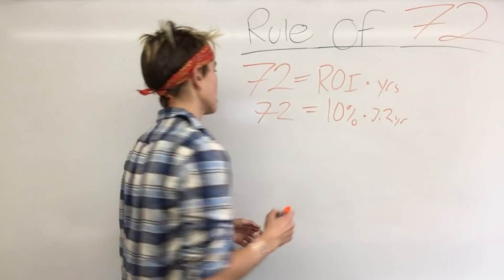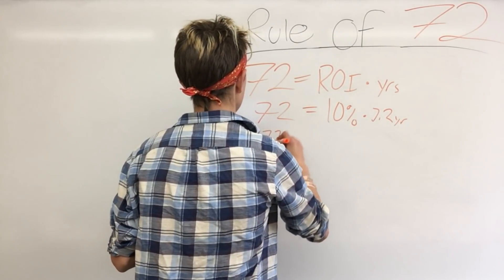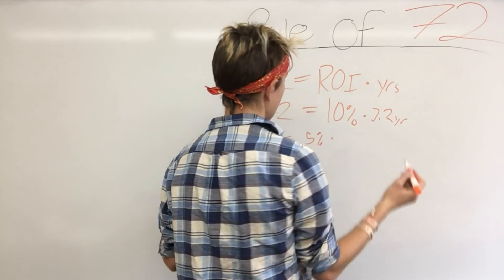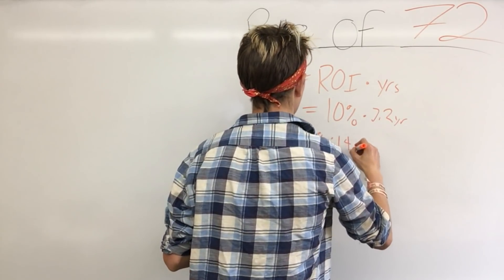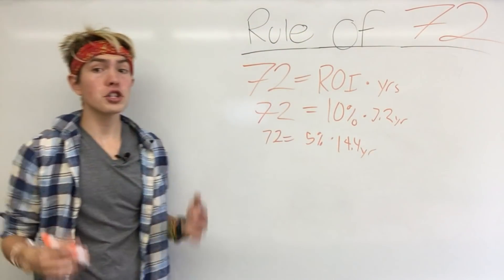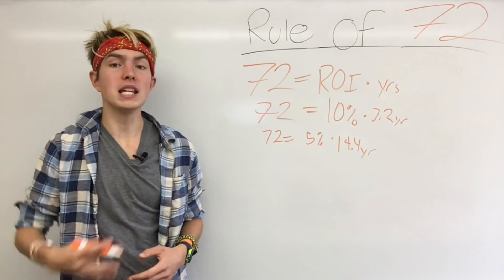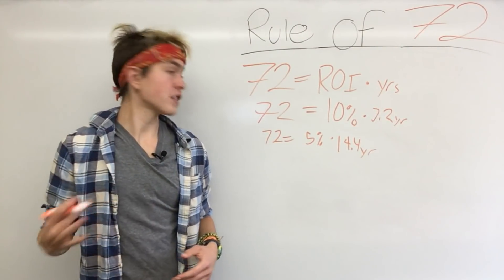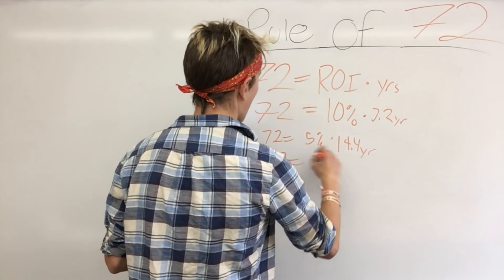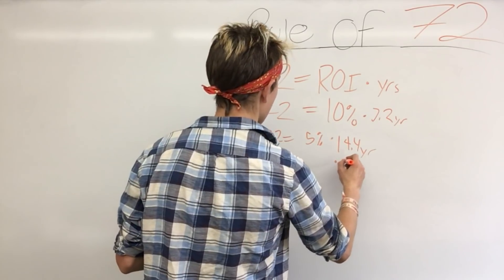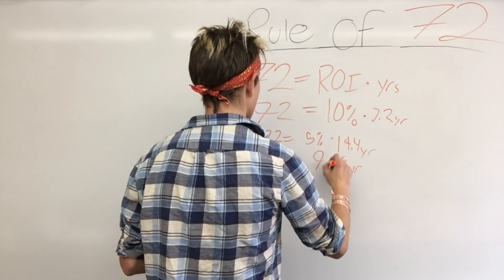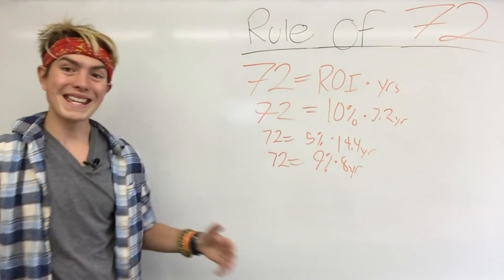We can do this with 5% as well. So 72 equals 5% times how many years — that's going to be 14.4 years. We can go backwards too: 72 equals how many percent times 8 years. 72 divided by 8 is 9, so you're going to need a 9% rate of return to double your money in 8 years.